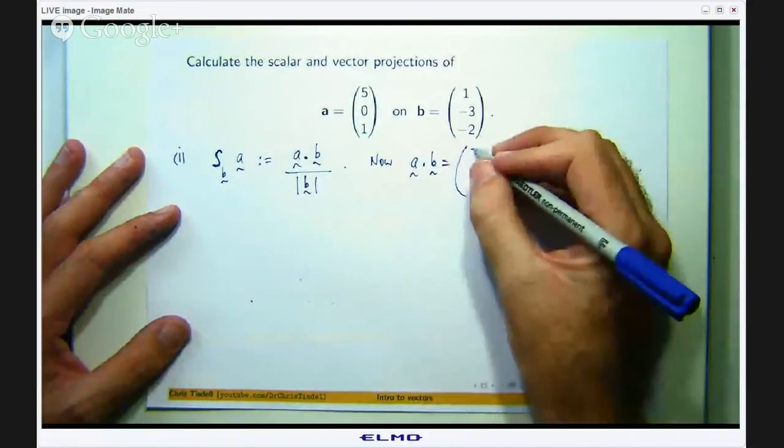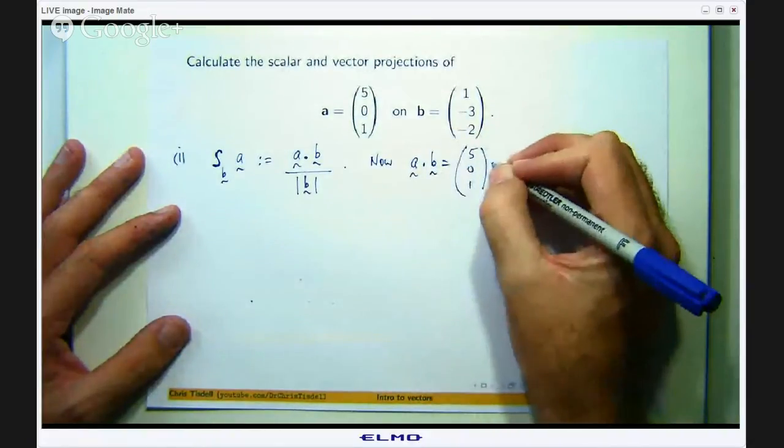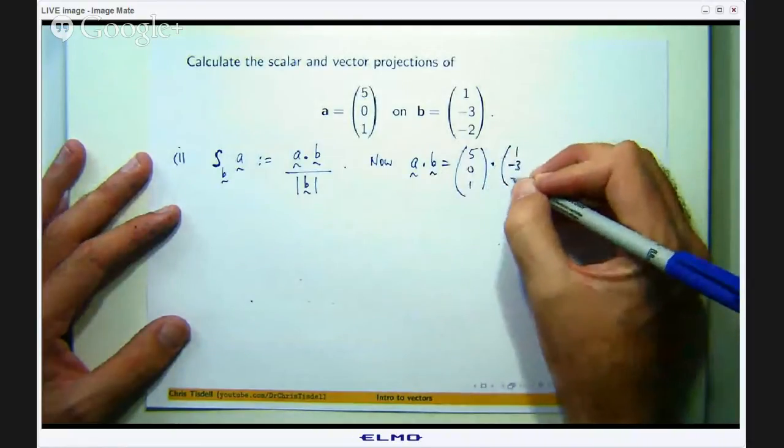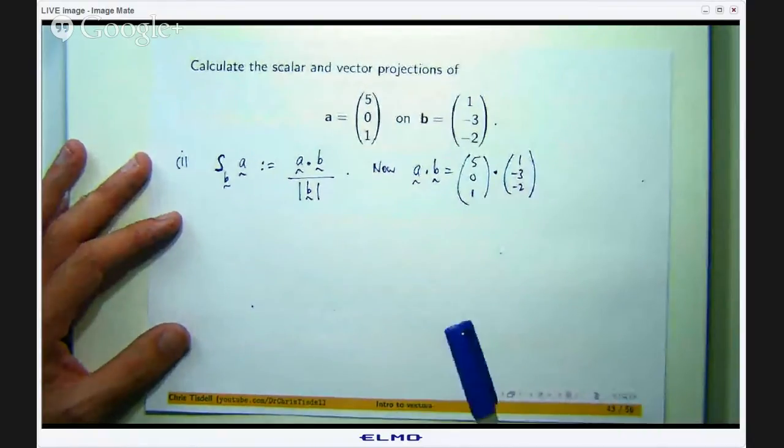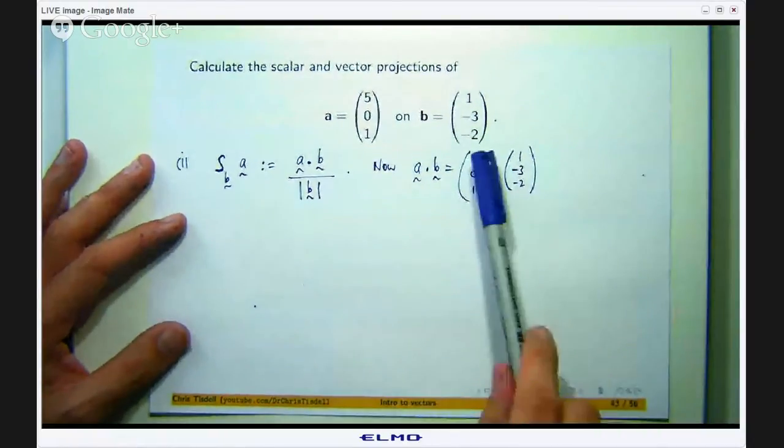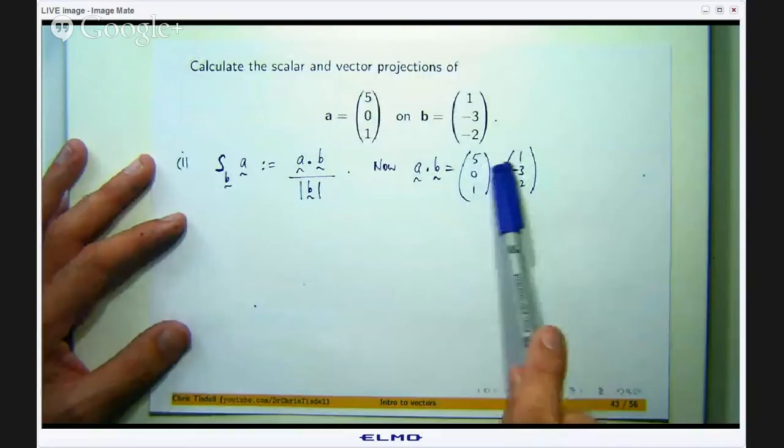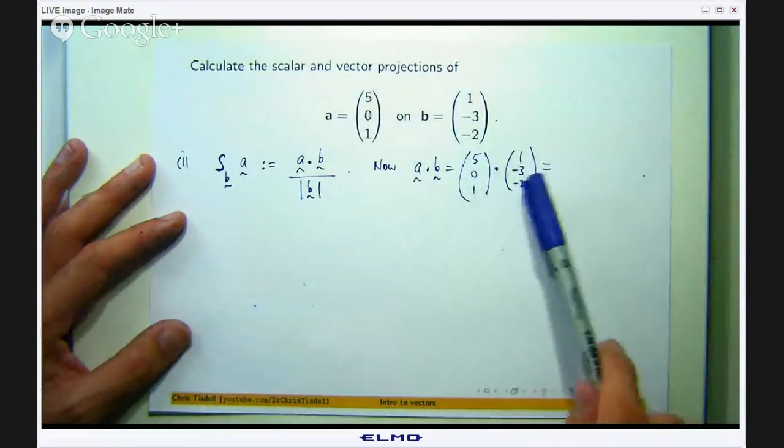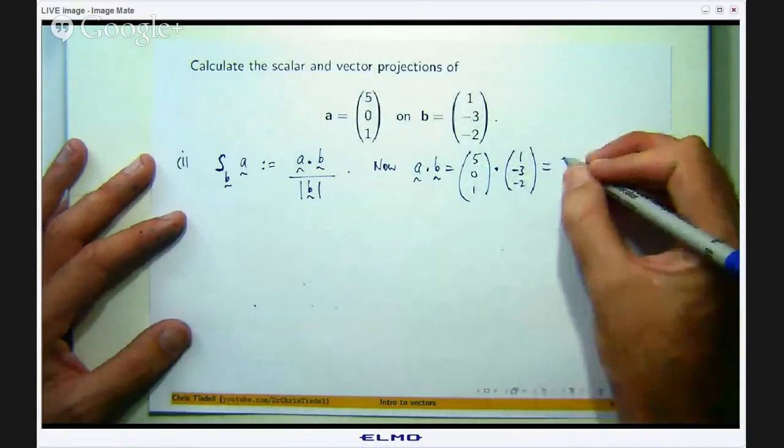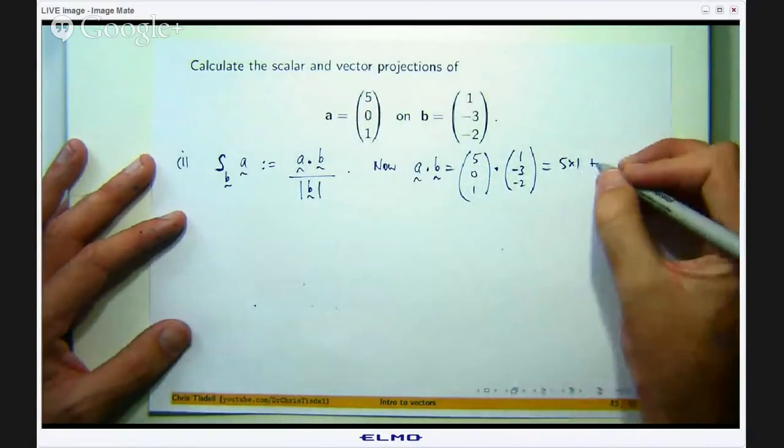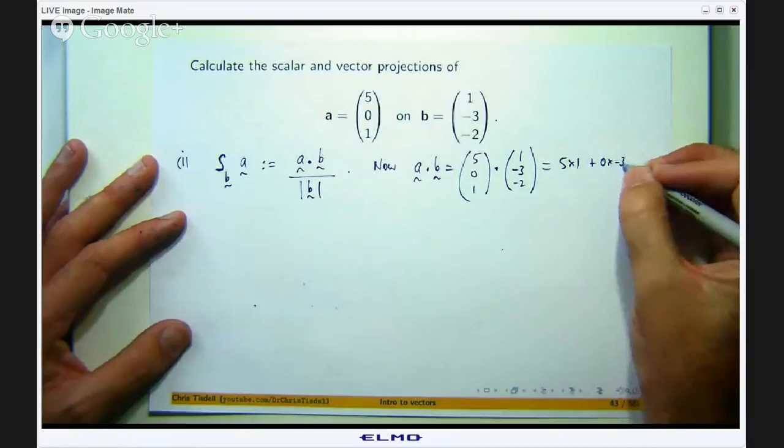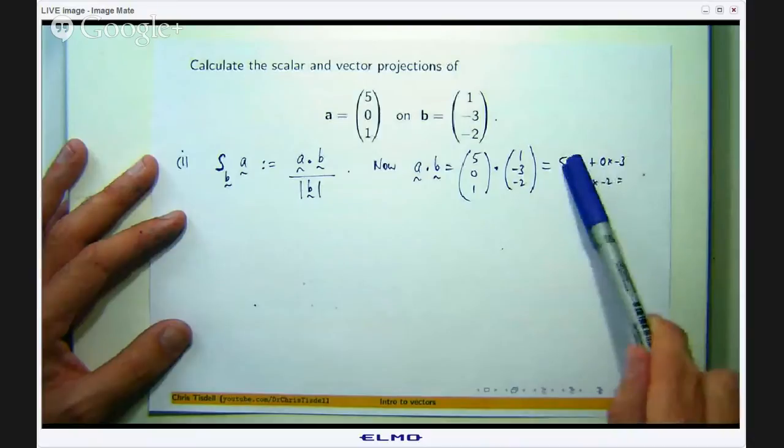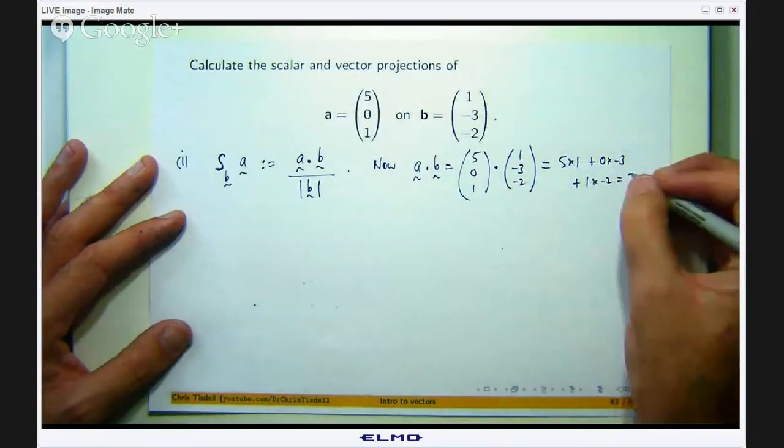We have to compute this and compute this and then put them together. Let us take our two vectors and remind ourselves what the dot product is. When you are multiplying one vector by another vector with a dot product you multiply in a component wise fashion and you add up. So it is 5 times 1 plus 0 times negative 3 plus 1 times negative 2.